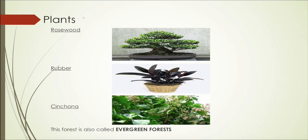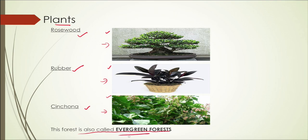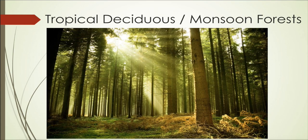Now let's talk about the plants found in tropical rainforests. We mainly find rosewoods, rubber plants, and cinchona here. Apart from these, there are other plants as well. This kind of forest is also known as evergreen forest because the trees are green throughout the year — they don't shed their leaves — which is why these rainforests are also called evergreen forests.